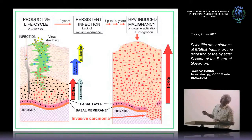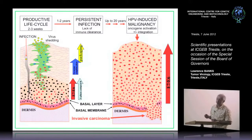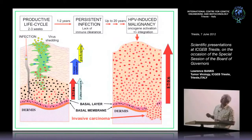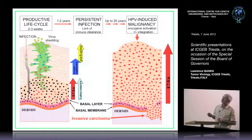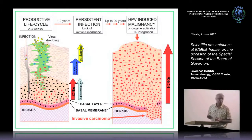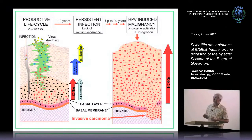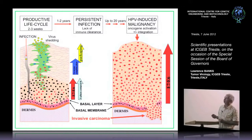Papillomavirus is quite unusual in that we can see long-term persistent infections with a lack of immune clearance. And these can go for two to four years. This is the single biggest risk factor for ultimate development of cervical cancer.